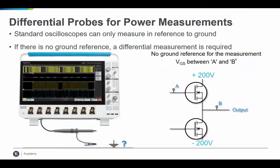Using a differential probe for power measurements is important. Standard oscilloscopes can only measure in reference to ground, so if there's no ground reference, a differential measurement is required. In a simple half-bridge transistor configuration, the potential at the high-voltage DC bus is plus 200 volts versus minus 200 volts at the bottom. If you want to make a measurement between points A and B, you can't use a single-ended probe because the output at point B has some voltage potential and you can't use the ground to connect to that. Using a differential probe in this case is ideal and what we recommend.